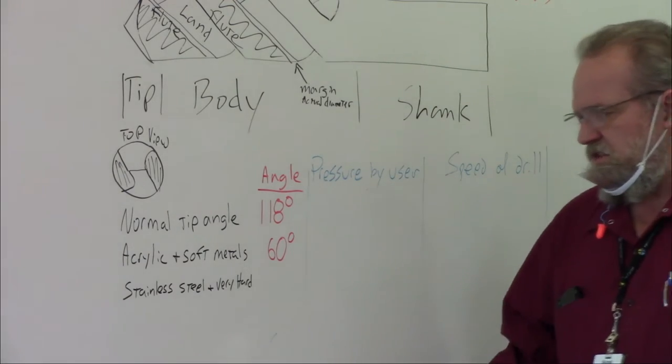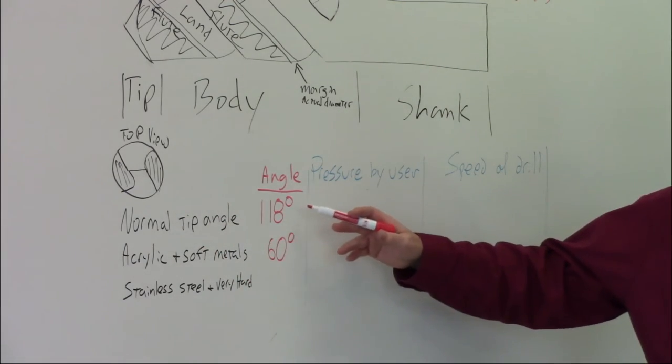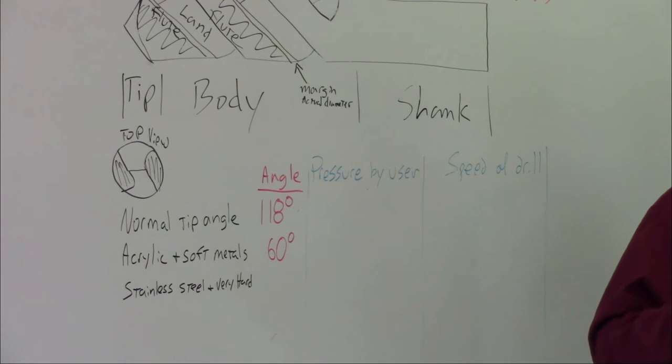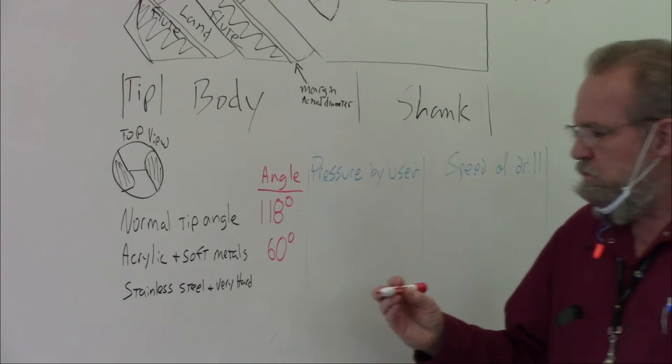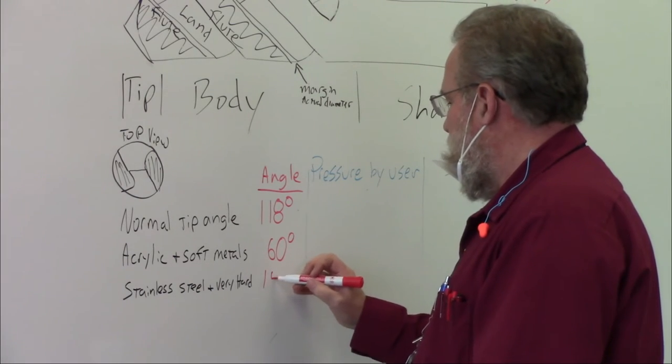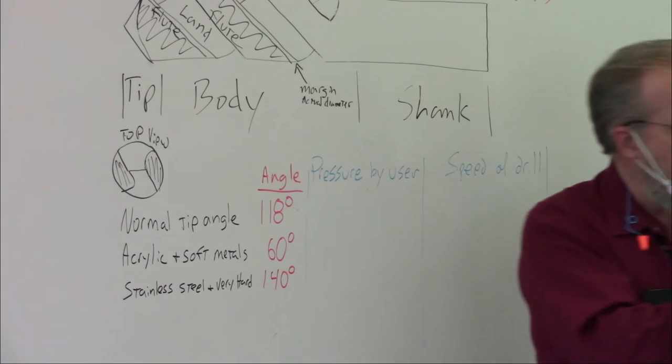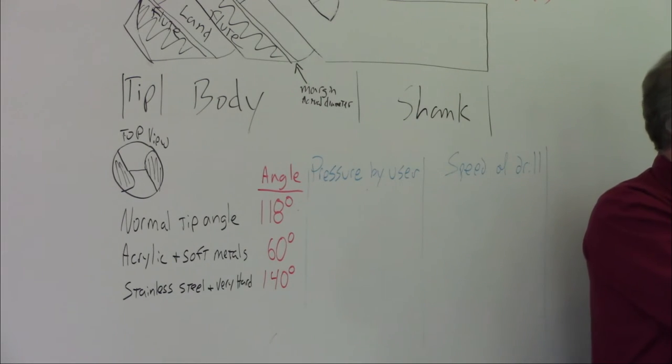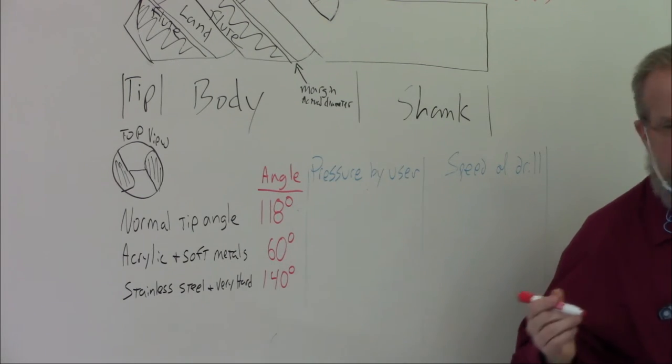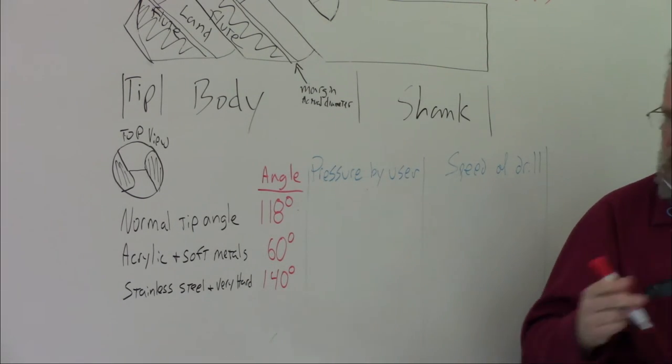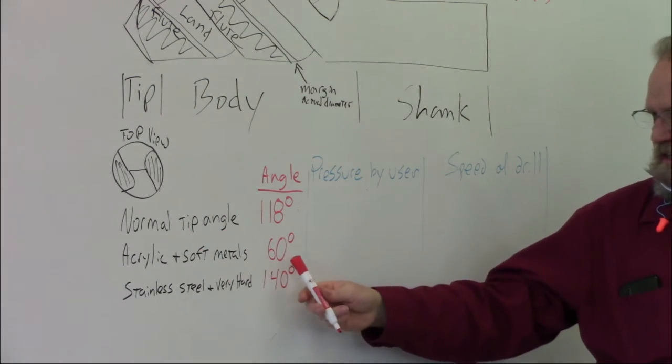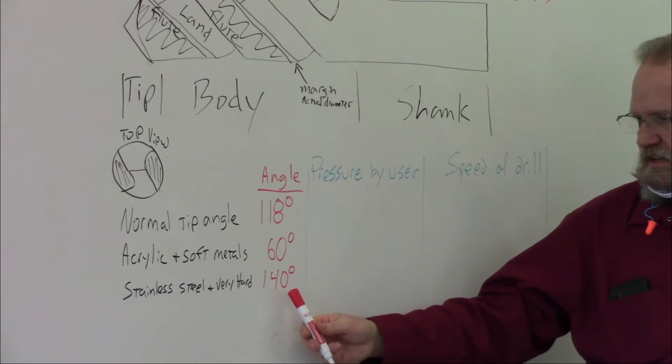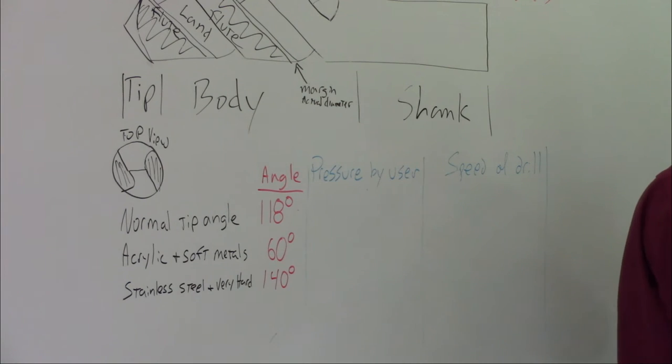And stainless steel and very hard steels. Now normal steel, we use 118 degrees. Mild steel. When I'm talking stainless steel, it's a very hard type of steel. Titanium is another one. That's 140 and 160 degrees. You are correct, but we're going to call it 140 degrees, though you can go up to 160. The most correct answer for our exam is 140. So everybody say with me, normal tip angle is? 118. Acrylics? 60. And stainless steel? 140. You need to know all of those.